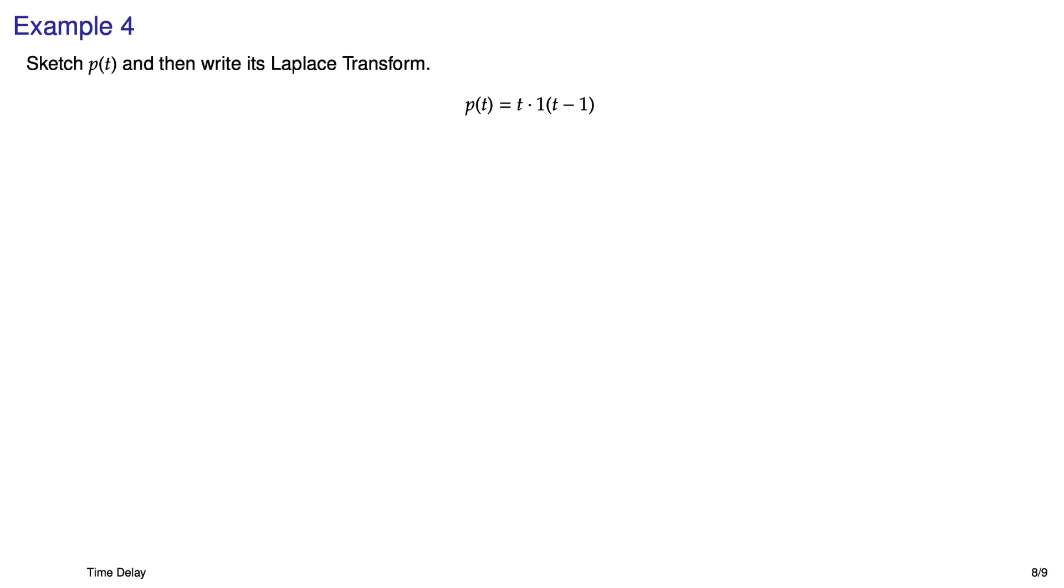Moving on to example number four, we have another function that doesn't look like a time-delayed function, because you can see a t and a t minus one argument in the step. But let's have a look at this thing. There's the ramp part, the t. Here's the unit step delayed in time by one second. And when you multiply those two functions together, this is what you get. And we have to take the Laplace transform of this puppy, so let's do it.